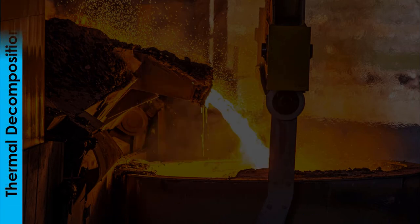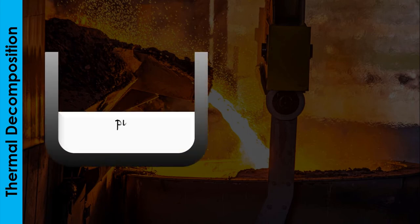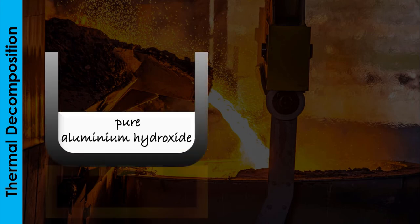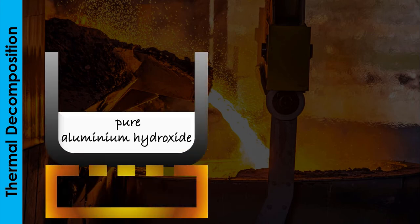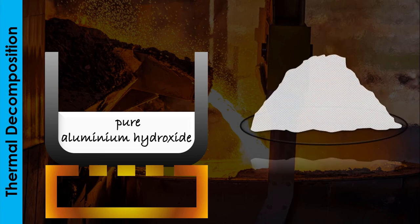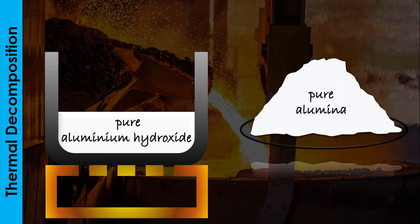The precipitated aluminium hydroxide is filtered out, washed and dried. It is then heated strongly to about 1100 degrees Celsius to yield pure anhydrous aluminium oxide and water vapour.